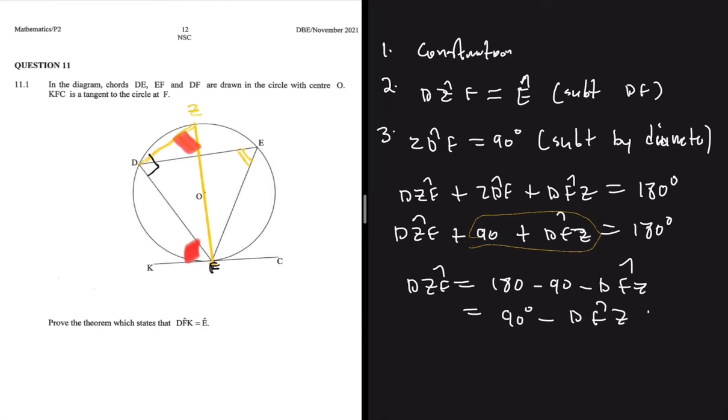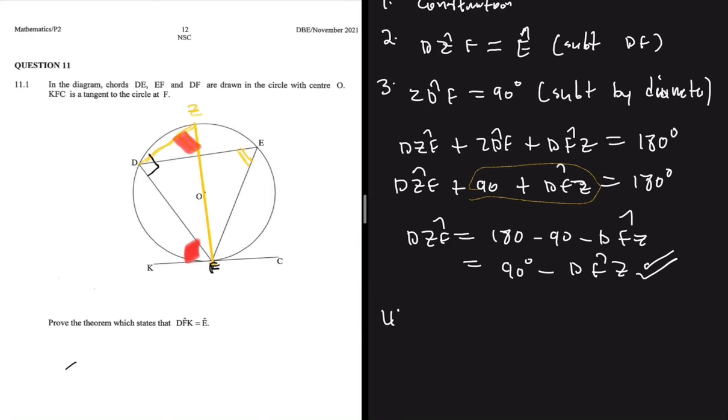We have determined DZF and it equals 90 minus DFZ. Now we are just left with proving that angle DFK is also equal to 90 minus DFZ, and we are going to be done.